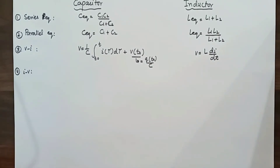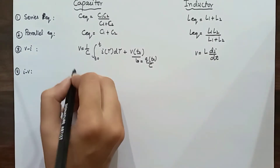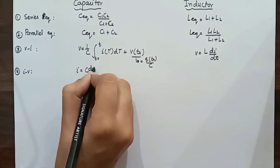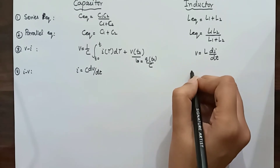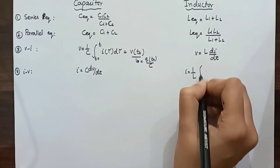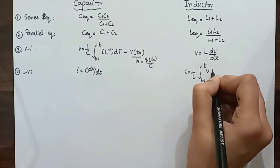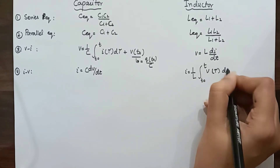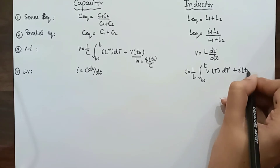The voltage across an inductor is directly proportional to the time rate of change of current, where L is the constant of proportionality. For a capacitor, current i = C × dv/dt, the time rate of change of voltage. For an inductor, current is the integration of the voltage-current characteristics across the inductor plus i(t-naught).